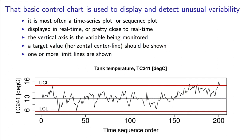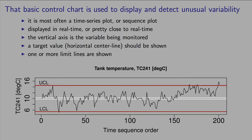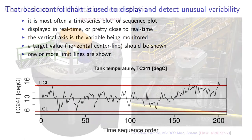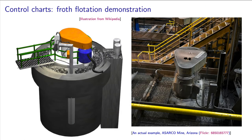The first feature that you notice is the fact that it is a time series or sequence plot, where new points are added on the right-hand side and previous points get removed or disappear on the left. It is displayed in real time, or as close to real time as possible. The units on the vertical axis are the units of the variable being measured. There might be several horizontal lines also drawn, one of which is the target line, and there might also be upper control limits and lower control limits. We'll see how these are derived in the coming videos. I'm going to start with a demonstration that will quickly illustrate how these are used.